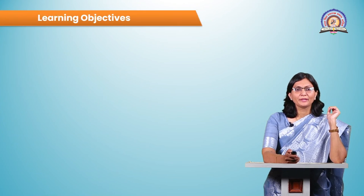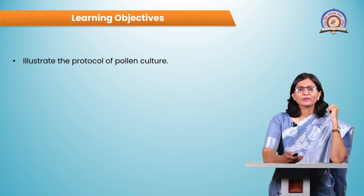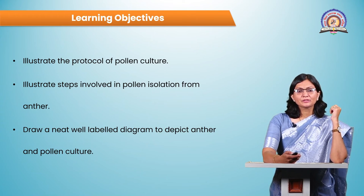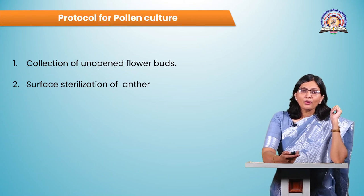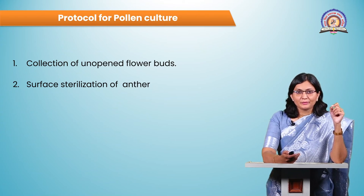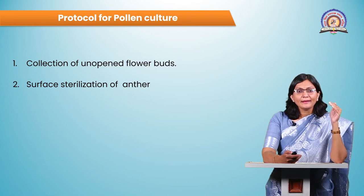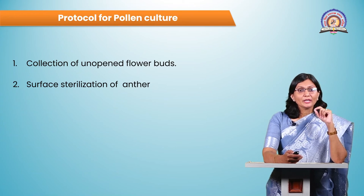Next is the protocol for pollen culture. After learning this protocol, you will be able to illustrate the steps involved in pollen isolation from the anther and draw a neat, well-labeled diagram depicting anther and pollen culture. The first step is collection of unopened flower buds — same as anther culture. Unopened buds are taken because we are interested in pollen at the uninucleated stage, not binucleated.